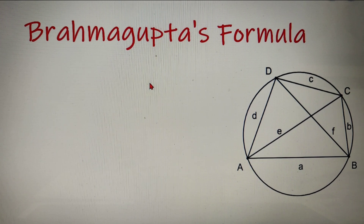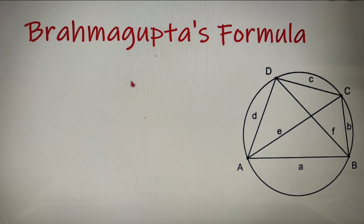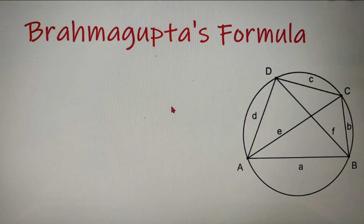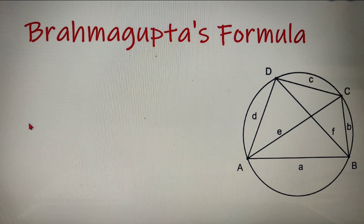Now the Brahmagupta formula that we are going to discuss is derived from Bretschneider's formula for finding out the area of any general quadrilateral. By Bretschneider's formula you can find out the area of any general quadrilateral, and we will also discuss that formula in our upcoming videos. So Brahmagupta's formula, by the help of which we can find out the area of any cyclic quadrilateral, is as follows.